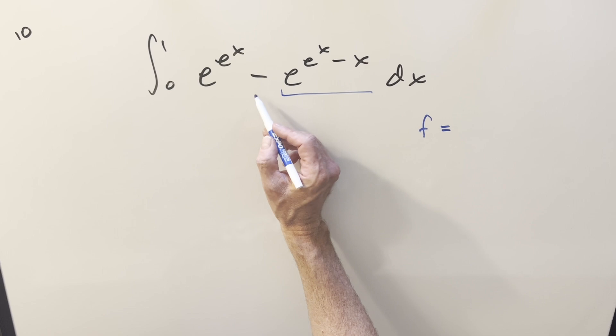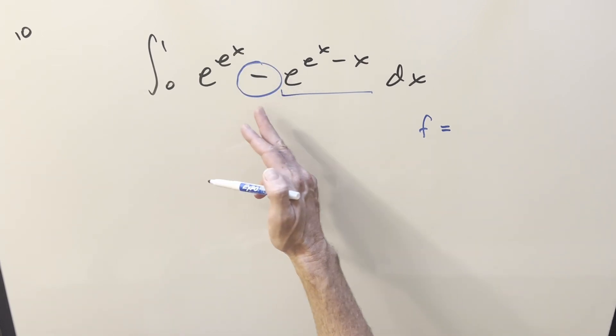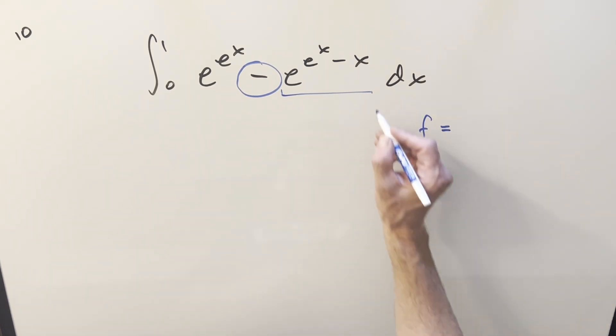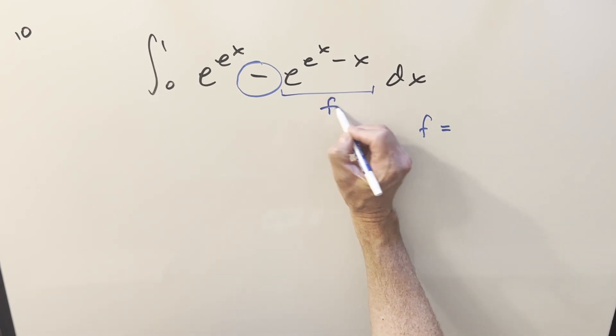What I was noticing was it seems like product rule could be a possibility. When we have plus or minus, you could split it into two integrals, or you might think of it as product rule. When I did that, I created a variable f, where I set this piece right here equal to f.